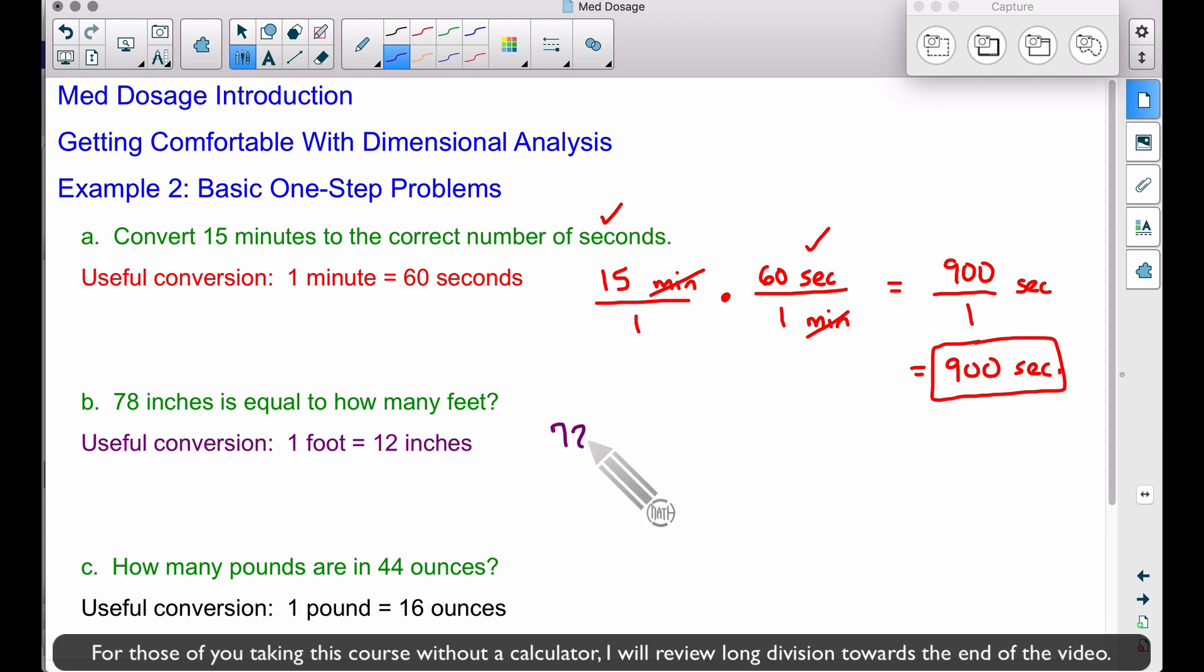We want inches at the bottom of this second fraction since we have it at the top. We have 12 inches, so let's put 12 inches at the bottom. That's the same as 1 foot at the top using this conversion. Inches cancel out, and the only word we have left is feet, which is what we want.